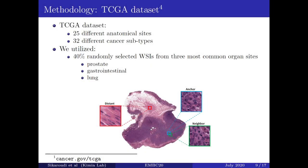Our work has been based upon the TCGA dataset, which contains whole slide imaging images from 25 different anatomical sites and 32 different cancer subtypes. We have only used 40% randomly selected whole slide images from three most common organ sites, including prostate, gastrointestinal, and lung organs.